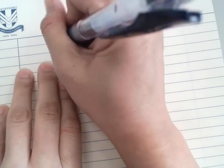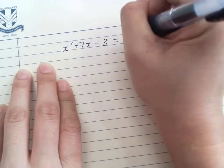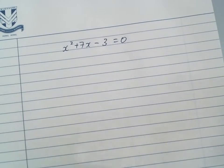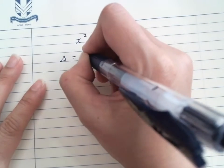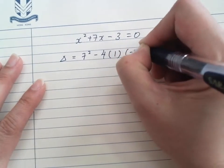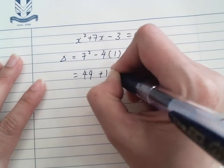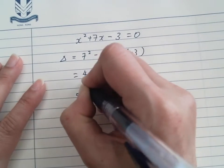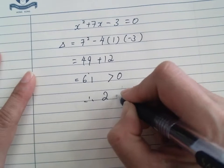Given that an equation, x squared plus 7x minus 3 equals to 0. I want to find out how many roots will that be. So I just find the discriminant there. It goes to b squared minus 4ac. And we have 49 plus 12 equals to 61. Since this is bigger than 0, therefore, two real roots.